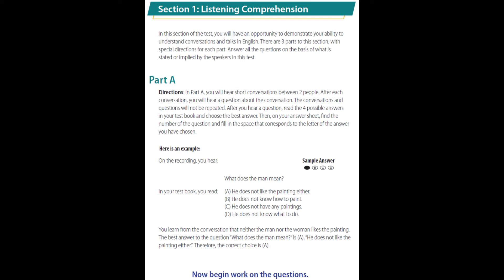In a moment, we will begin the Listening Comprehension section of the test. Read the directions for Section 1 in your test book as you listen to the directions on this recording. Section 1: Listening Comprehension. In this section of the test, you will have an opportunity to demonstrate your ability to understand conversations and talks in English. There are three parts to this section, with special directions for each part. Answer all the questions on the basis of what is stated or implied by the speakers in this test.